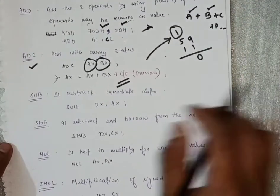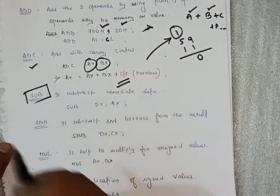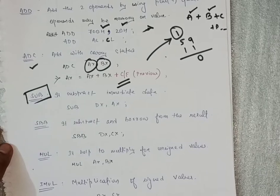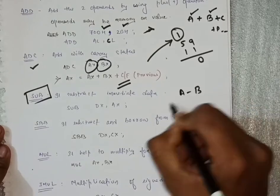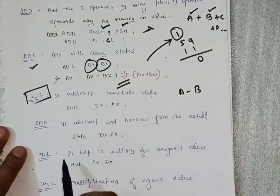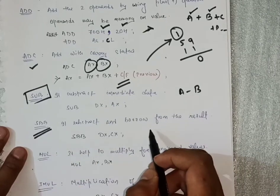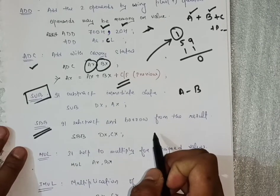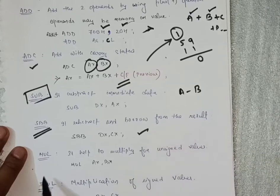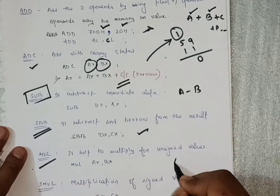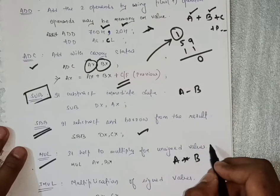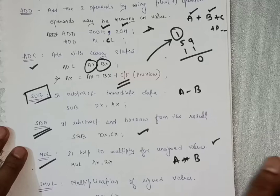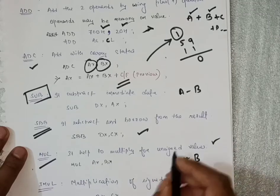After that, SUB — as the name suggests, it performs subtraction between two values, like A minus B. SBB is subtract with borrow — it tells how much borrow we have in the result. MUL is multiplication — as the name suggests A into B will get multiplied, but for unsigned values only — meaning no sign.